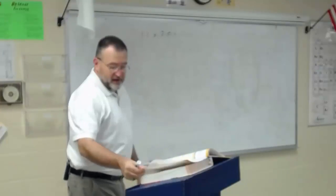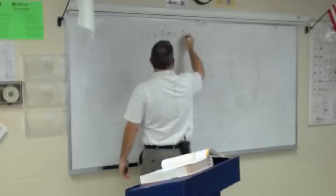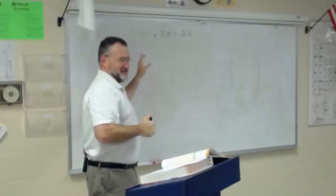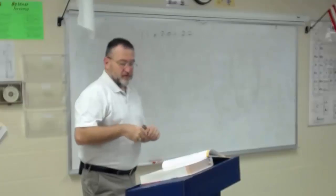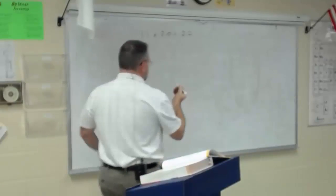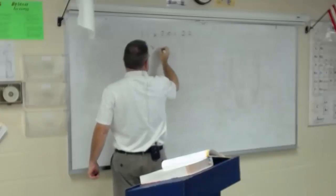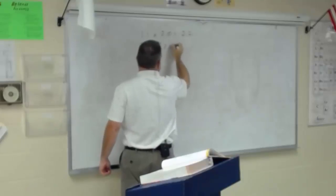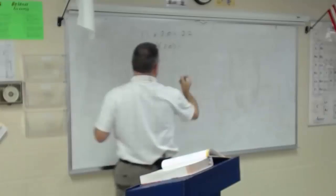If we looked at 1.1 times 2.0, in math you'd say the answer is 2.2 — basic mathematics. On page 16 they extend that a little farther and say, if you wrote in algebra 1.1x times 2.0, what would you get? This would equal 2.2x.